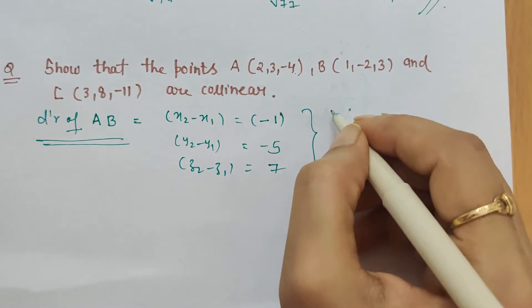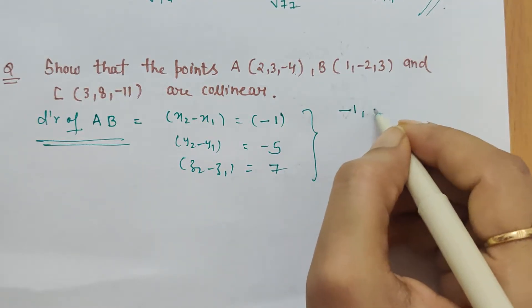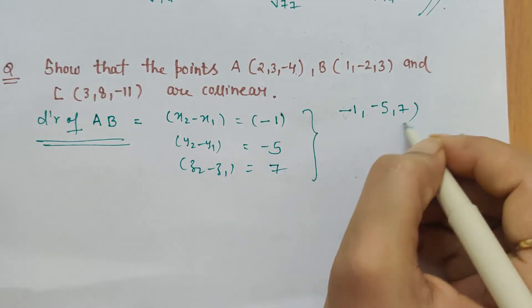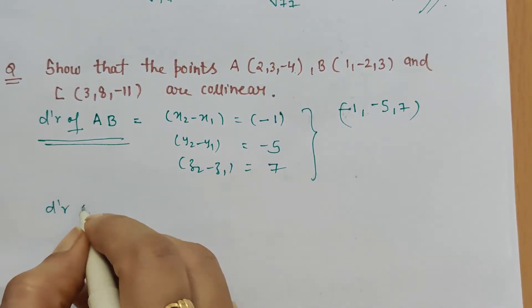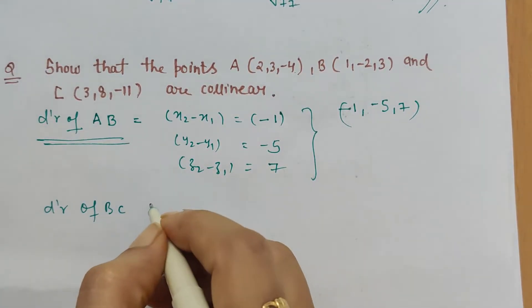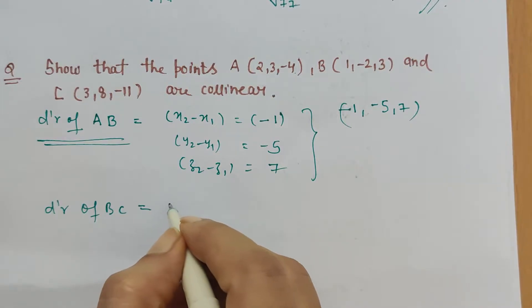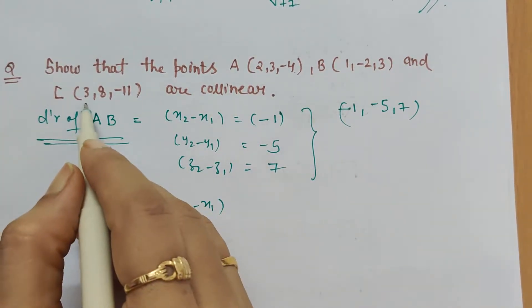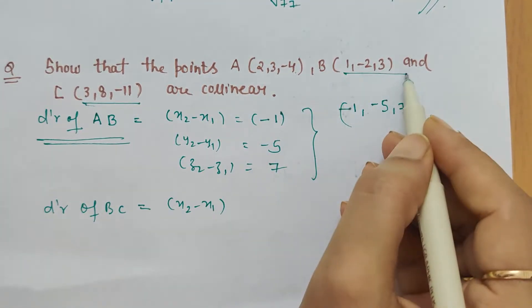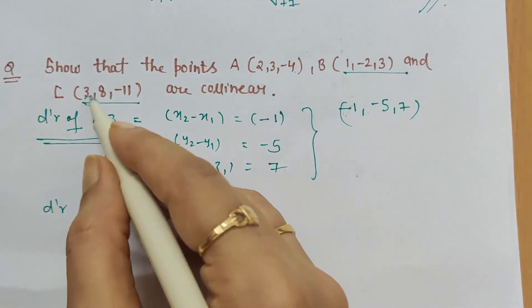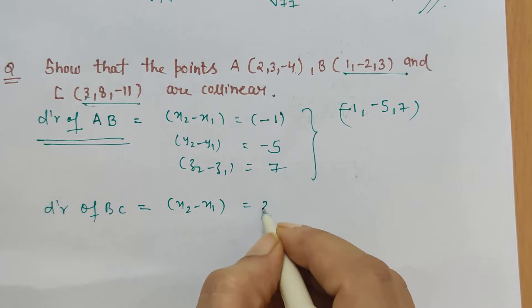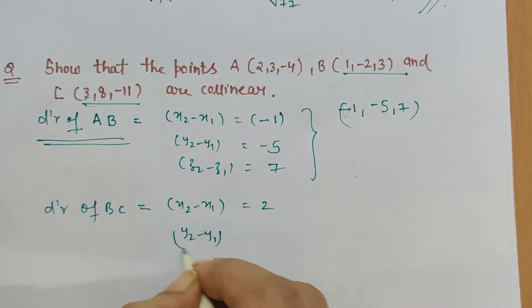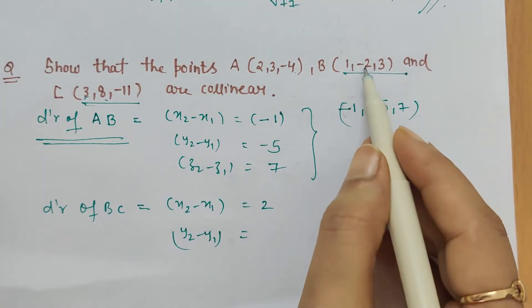The direction ratio of AB we got is (-1, -5, 7). Now let's find the direction ratio of BC. Again, here we have to find x₂ minus x₁. Point C is here and B is here. So for BC: 3 minus 1 is 2. Then y₂ minus y₁, that means 8 minus...